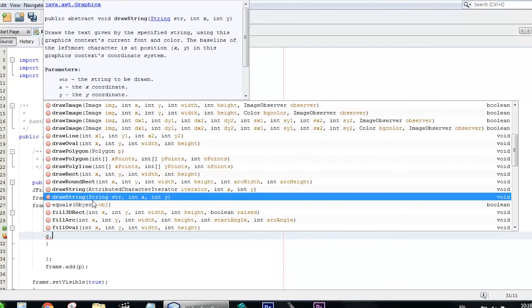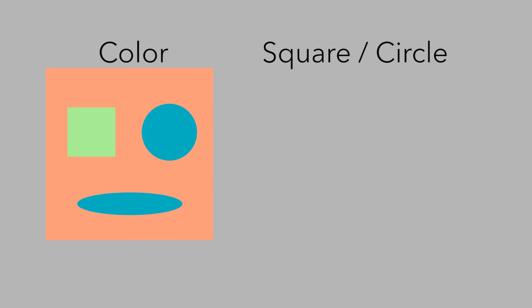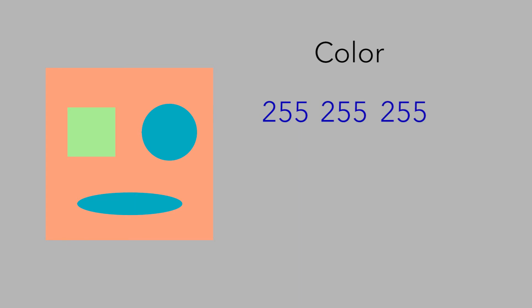We are only going to use three functions: fillRect, fillOval, and setColor. Before we continue, I want to point out what's random in this program: the shape of each eye, the shape of the face, and the mouth — each is either a square or a circle. The color of each shape is also random. A color is just three numbers with values between 0 and 255.